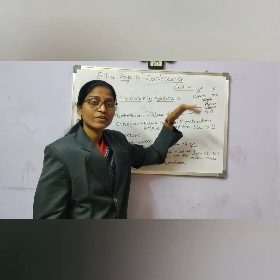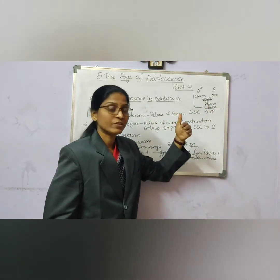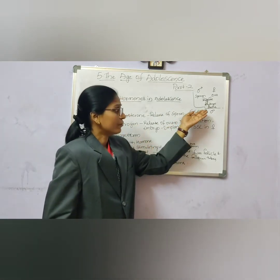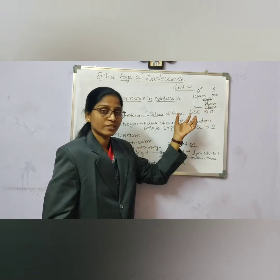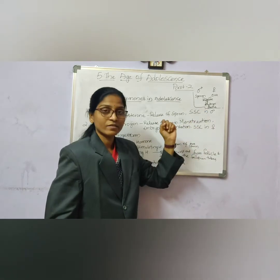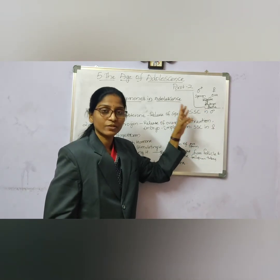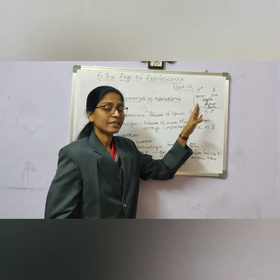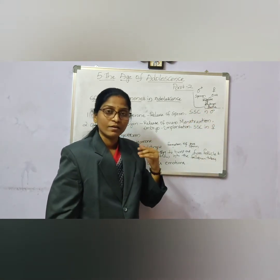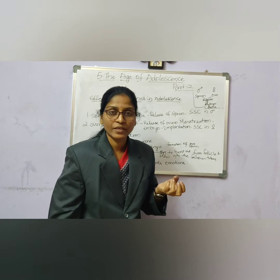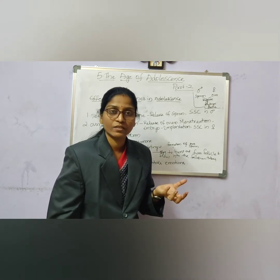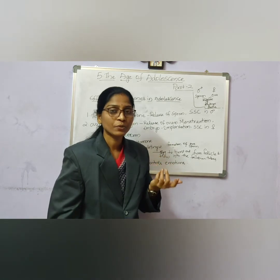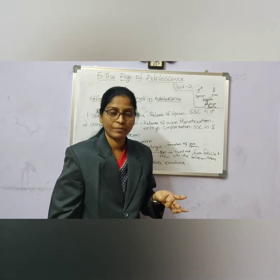The zygote, after a number of divisions, changes into an embryo. The embryo, after undergoing changes, becomes a fetus which is implanted in the uterus of the female. After completing the 9 months — that is the gestation period or pregnancy period — a baby is produced.